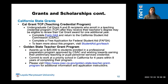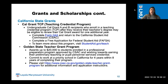Continuing with grants and scholarships: we also have the California State Grants — the Cal Grant TCP, which is our Teaching Credential Program. Undergraduate Cal Grant A and B recipients who enroll in teaching credential programs after receiving their bachelor's degree may be eligible to renew their Cal Grant award for one additional year. To do this, complete form G44 and return it to the California Student Aid Commission, which we call CSAC. Complete your FAFSA, and to learn more visit studentaid.gov/teach.